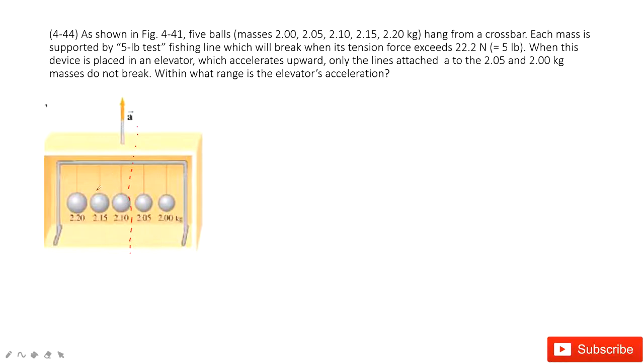And above, at this side, this fishing line will break when we put this system in the elevator. And for these two, the fishing line does not break. So we consider these boundaries, 2.1 and 2.05.